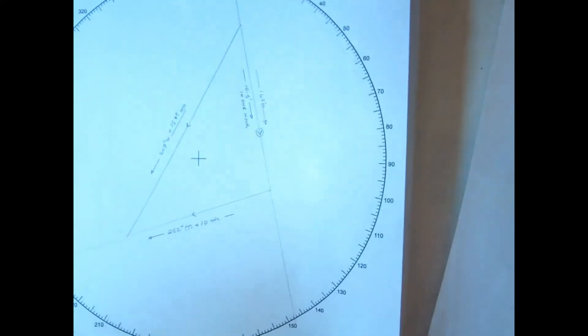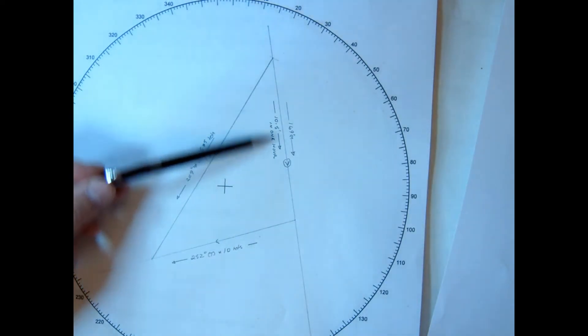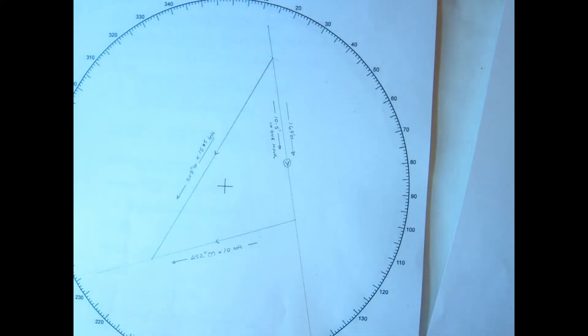Now we do our plot. I've drawn a line down there bearing 169, and anywhere along there I've drawn the other vessel doing a course of 252. I could have drawn it here, here, here, here, it doesn't really matter.